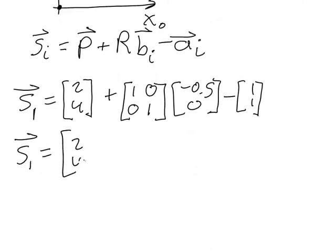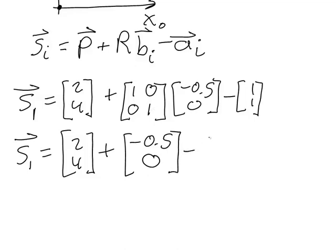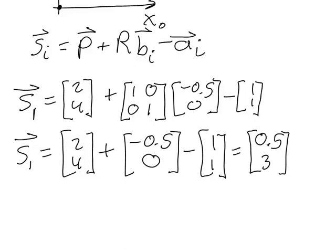So I now do this calculation: 2, 4, plus — multiplying the identity matrix times the vector — I get 1 times negative 0.5, and then 0 times negative 0.5 plus 1 times 0, which gives 0, minus 1, 1. And I get that S1 has to be 0.5, 3.